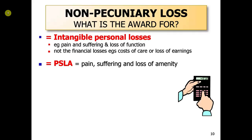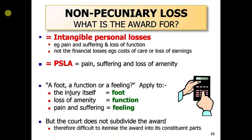Let's move to just one of those heads — general damages: pain, suffering, and loss of amenity. Let's move to the most important: the 66% of tort damages. What are we dealing with here? It's pain, suffering, and loss of function. It's not the financial costs, it's not the cost of care, it's not future pecuniary loss.